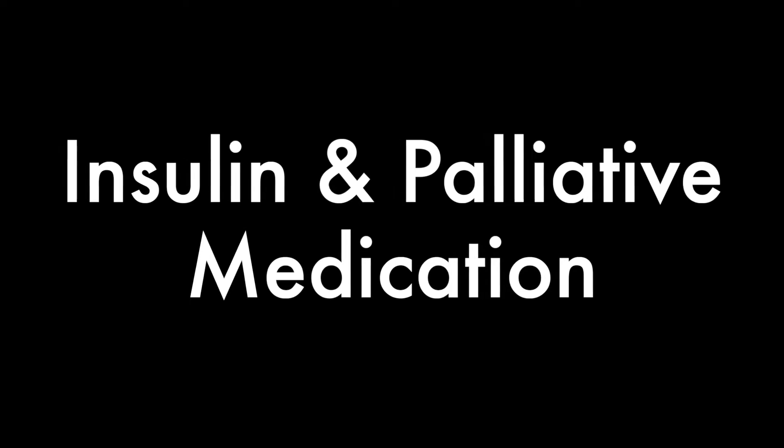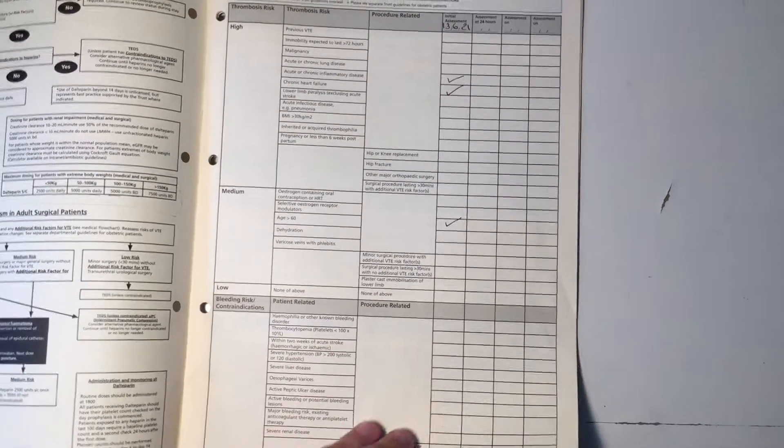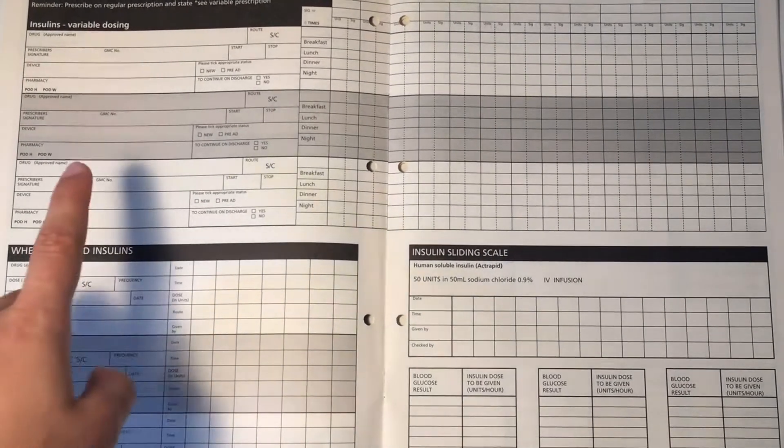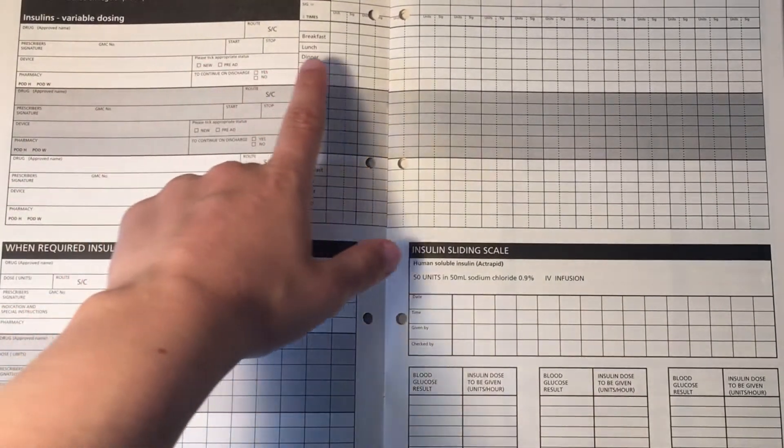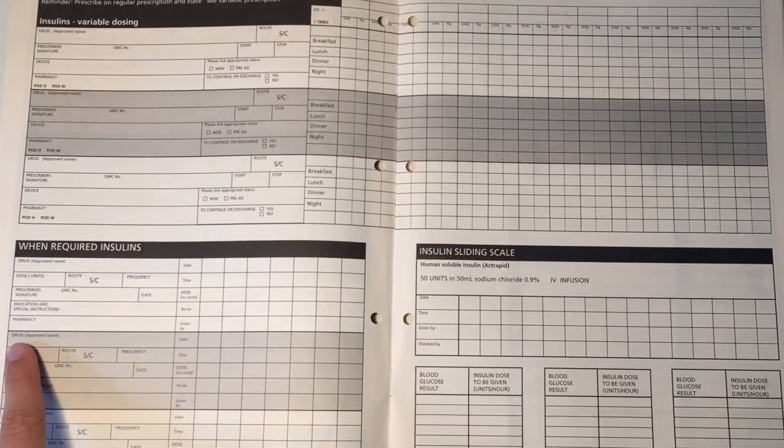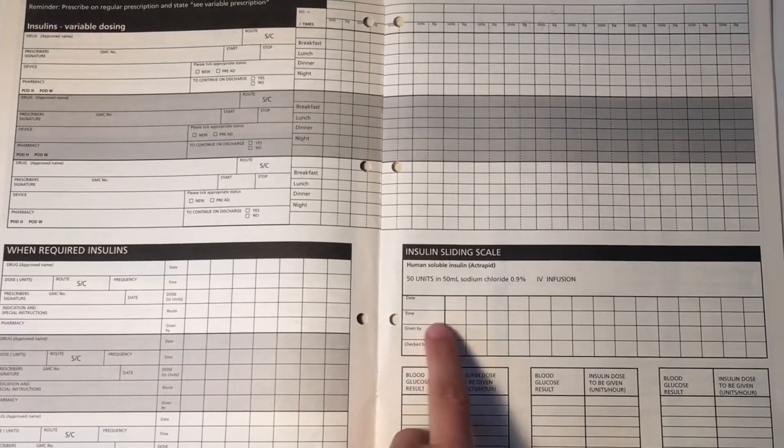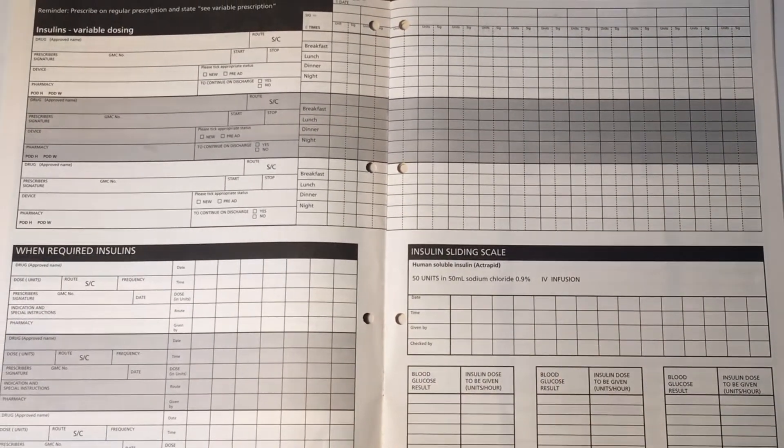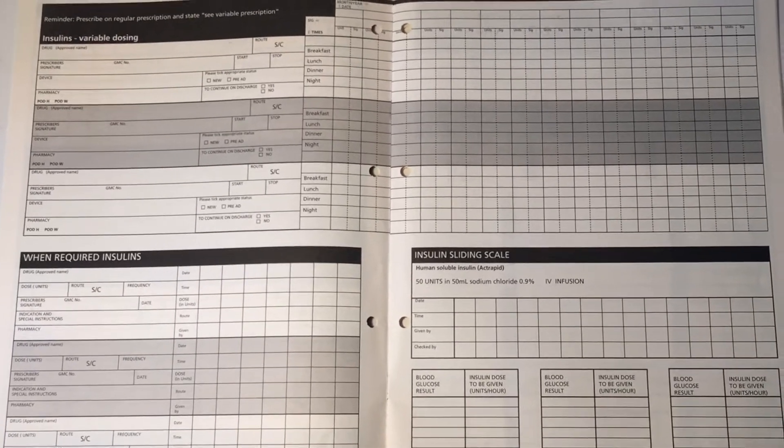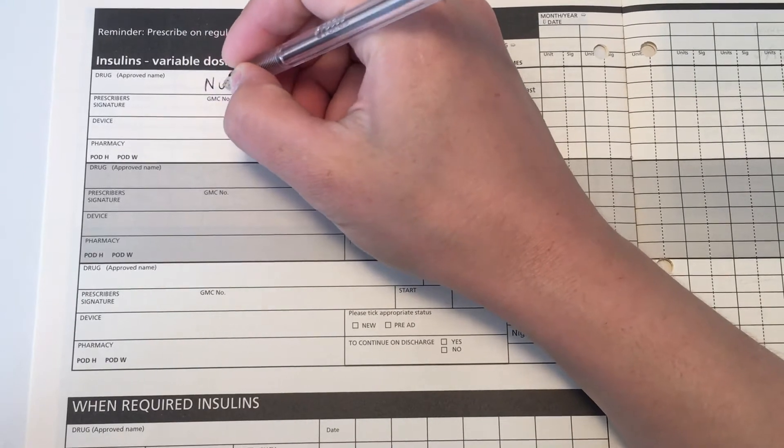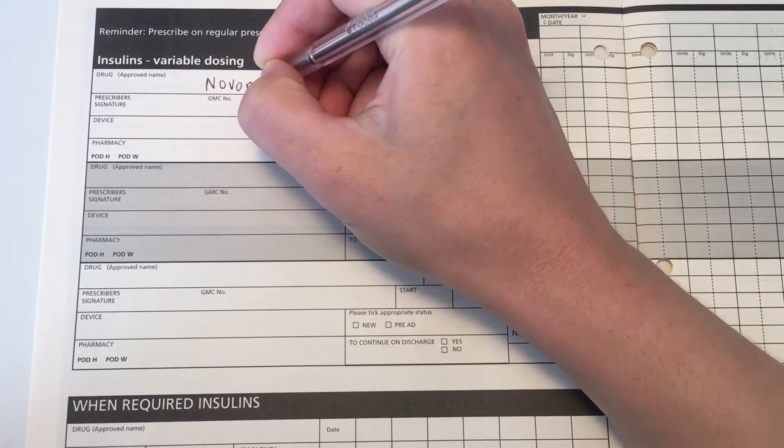The first thing we're going to talk about is insulin. So there's a whole area designated to insulin prescribing on the drug chart. On the top left you'll have your regular doses of insulin that the patient usually has at home. On the bottom left this is the PRN insulin, so as required, and this is where you'll put the Novorapid for when the BMs are very high. Then in the bottom right you've got the insulin sliding scale, a section for the nurses to complete and then a section for the doctors. This is for variable rate insulin when patients need their insulin adapted to what their actual glucose readings are.